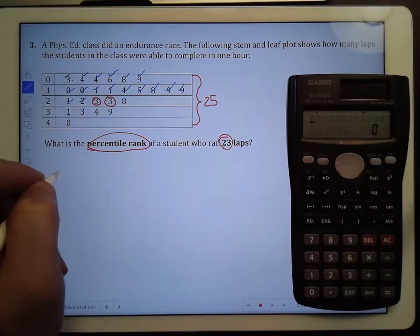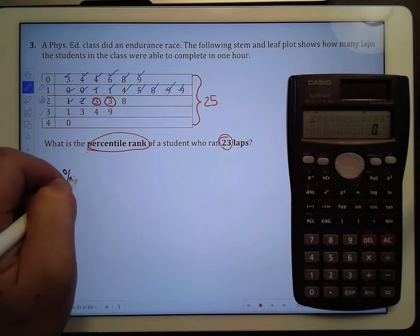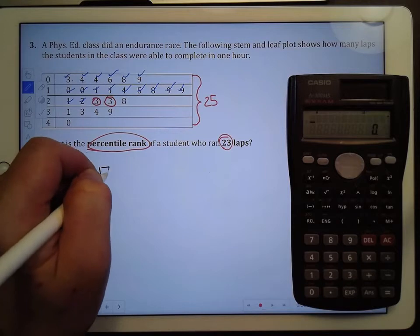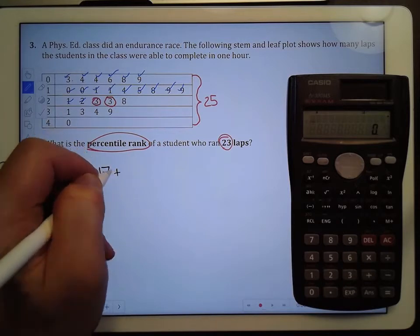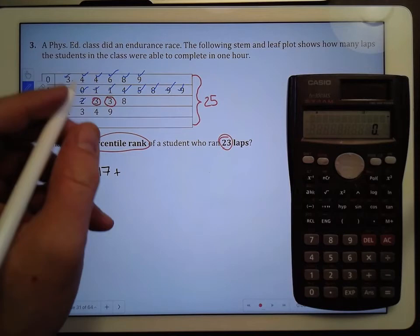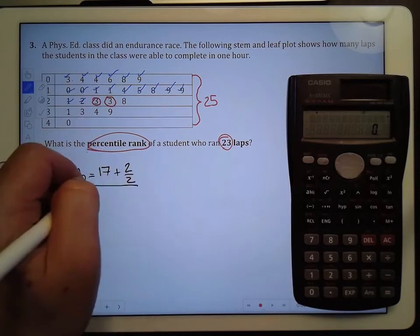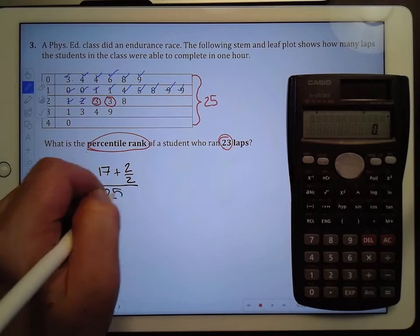The formula says to calculate the percentile, we're going to take the number that are less, which we just determined is 17, plus the number that are equal to the target, we have 2 of those, over 2, divided by the total number of values, which are 25.